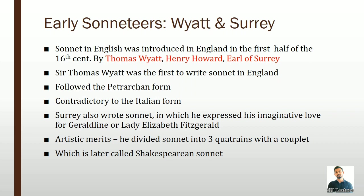Surrey was the first to use that form of sonnet, which came to be called the Shakespearean form. Even Shakespeare followed this in his dramas. The rhyme scheme for the Shakespearean sonnet is a b a b c d c d e f e f g g, though before Shakespeare it was introduced by these early sonneteers, Wyatt and Surrey.